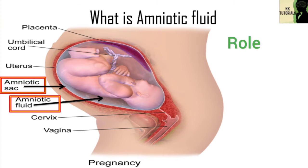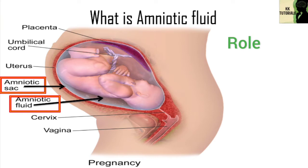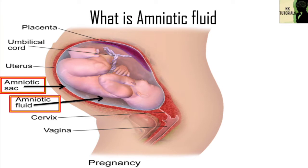What is the role of this amniotic fluid? It helps in the movement of the baby in the womb, which allows for proper bone growth. It also helps the lungs to develop properly. It prevents pressure on the umbilical cord. It keeps a constant temperature around the baby, protecting from heat loss. It also protects the baby from outside injuries such as sudden blows or movements.